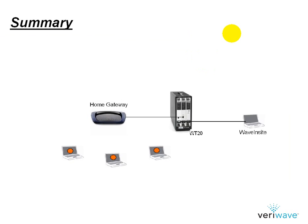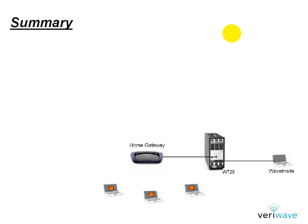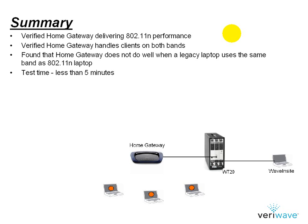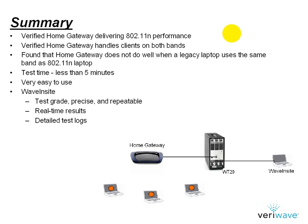In summary, we found that the home gateway can deliver 802.11n performance. We concluded that the home gateway can handle 11n and legacy traffic simultaneously on two radio bands. We found that the home gateway does not do that well when faced with legacy and 11n laptops contending for the same radio band. Using Wave Insight, we conducted a relatively complex test in less than 5 minutes. Testing with Wave Insight is very easy and takes advantage of using a test-grade precise and repeatable tool, provides real-time results, detailed test logs, and a comprehensive test report.